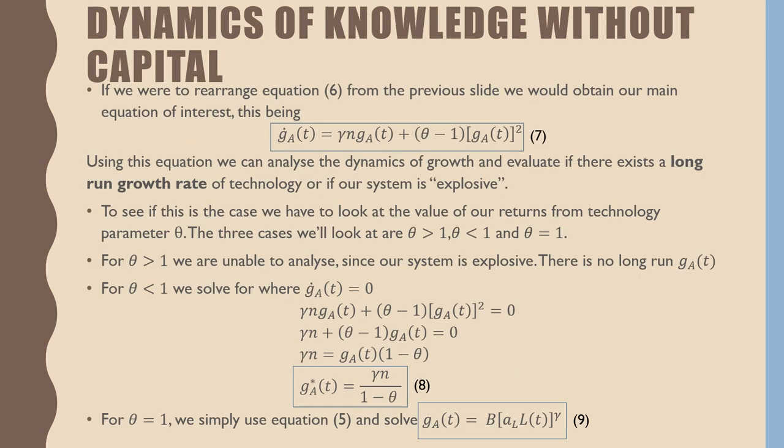If we were to rearrange equation 6 from the previous slide, we would obtain our main equation of interest, the growth rate transition equation of technology: ġ_A(t) equals γn times g_A(t) plus (θ minus 1) times g_A(t)^2. Using this equation we can analyze the dynamics of growth and evaluate if there exists a long-run growth rate of technology or if our system is explosive.